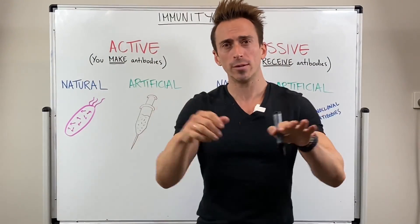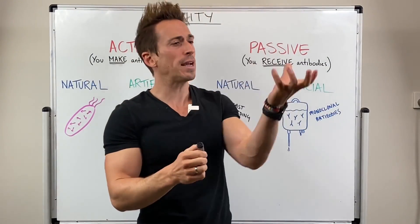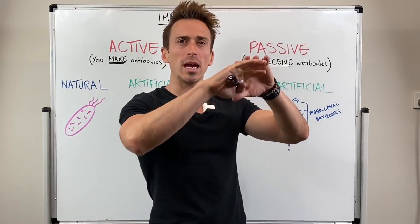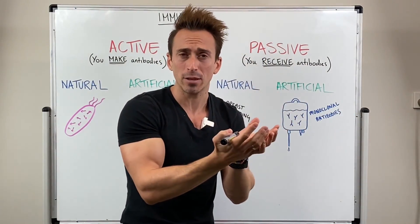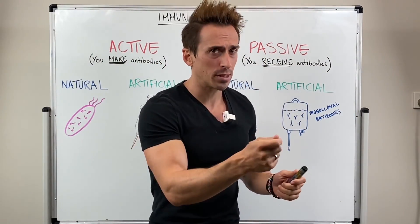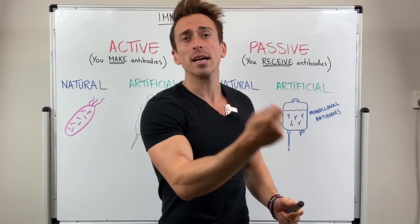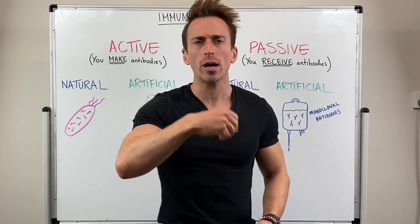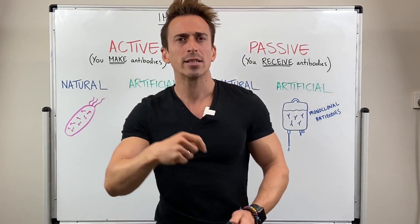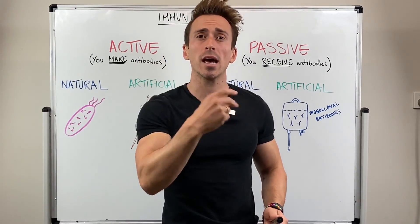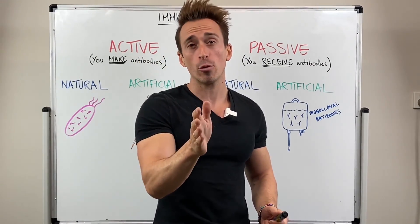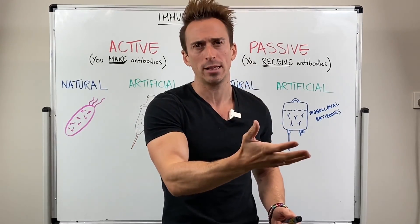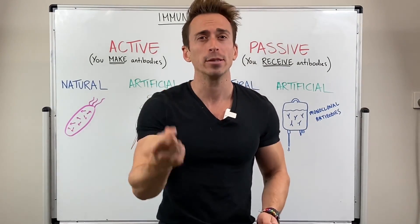There are two arms of the immune system: the innate arm and the adaptive arm. The innate aspect of the immune system is non-specific and doesn't develop a memory. So it doesn't matter whether it's a bacteria, virus, or fungi — it's going to attack it the same way, and no memory is developed. It doesn't remember attacking that virus or bacteria if it happens again.